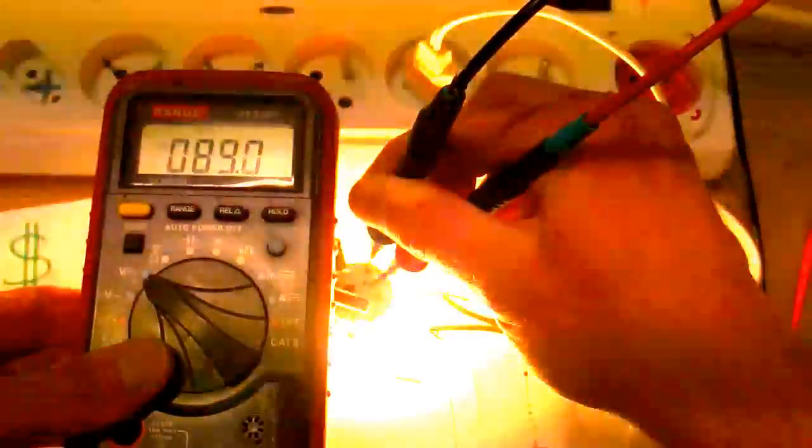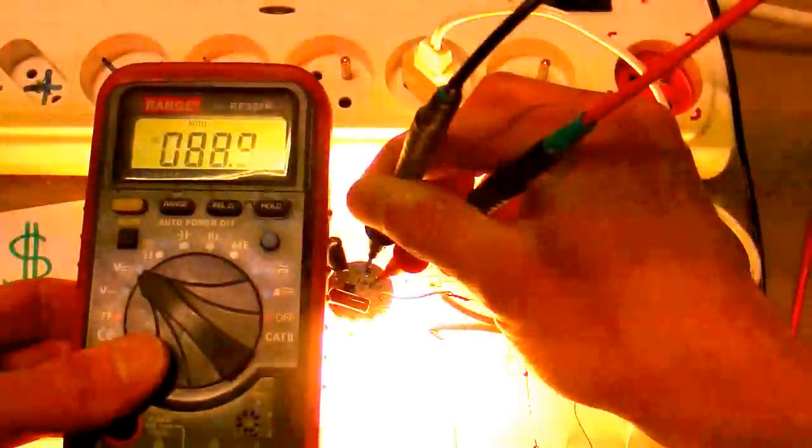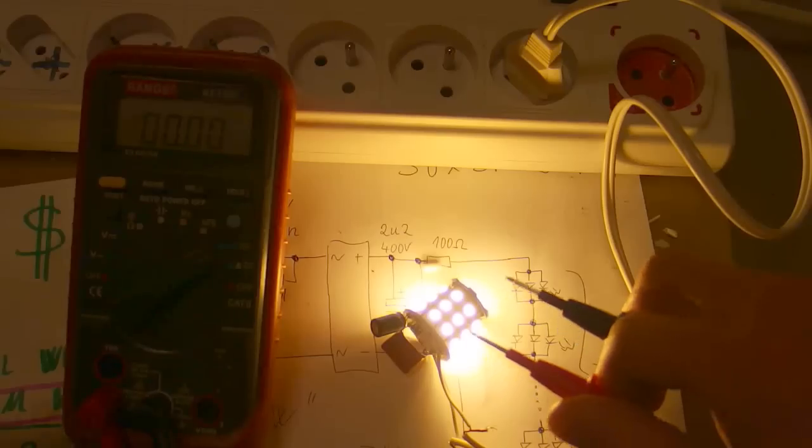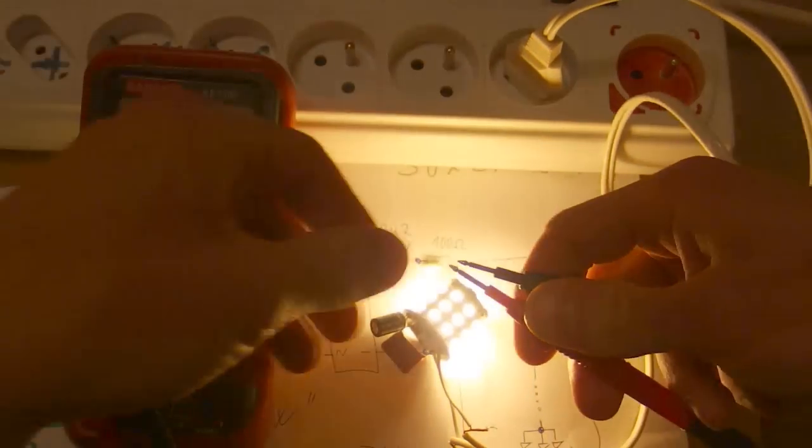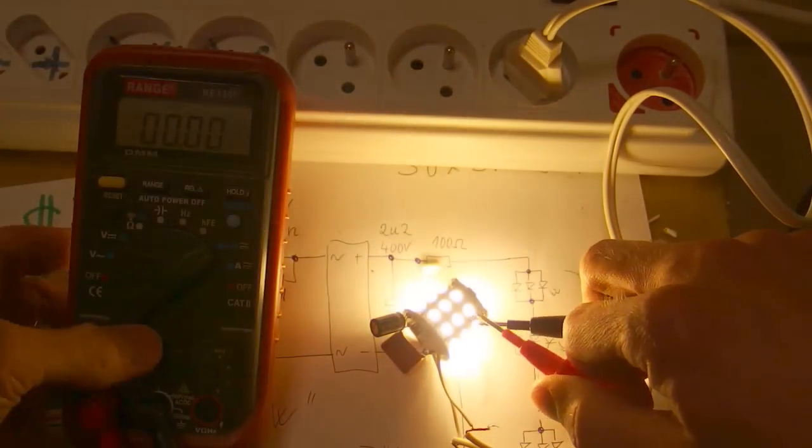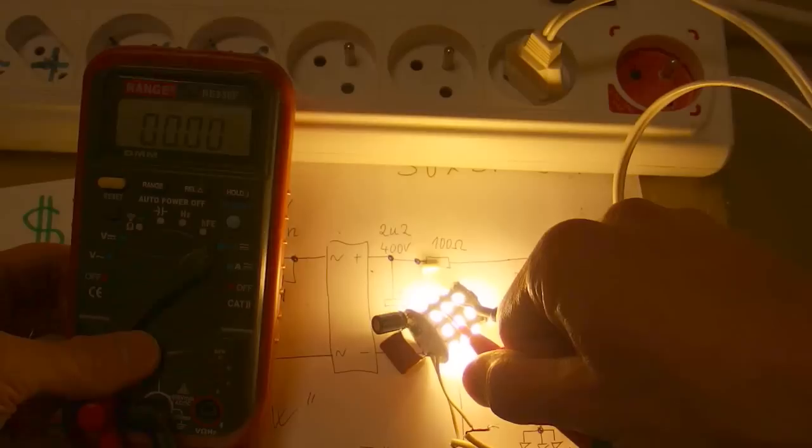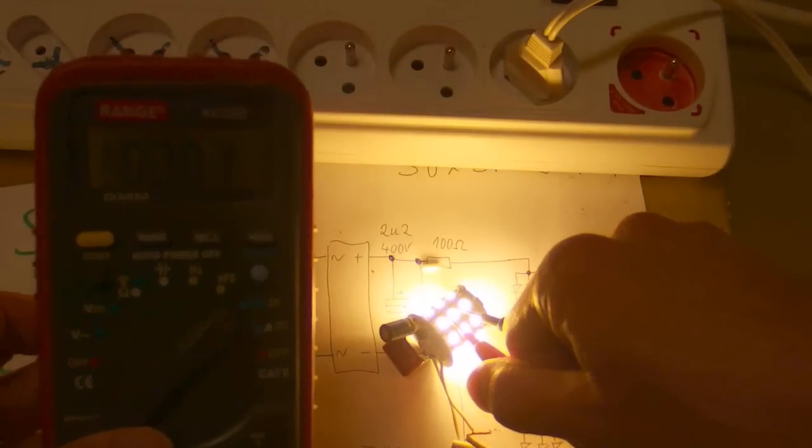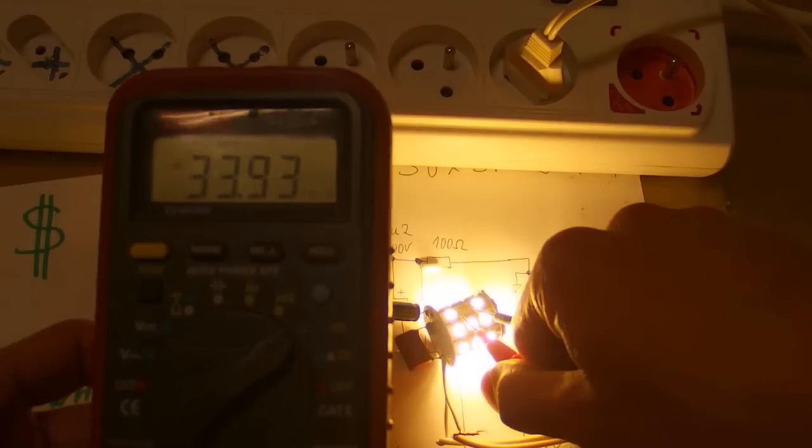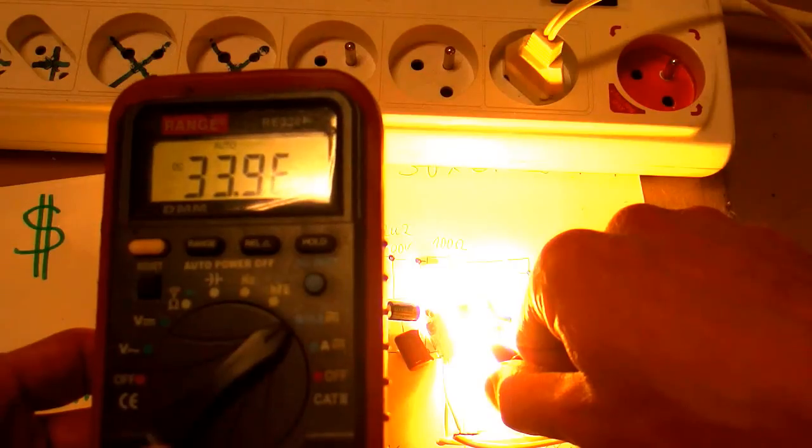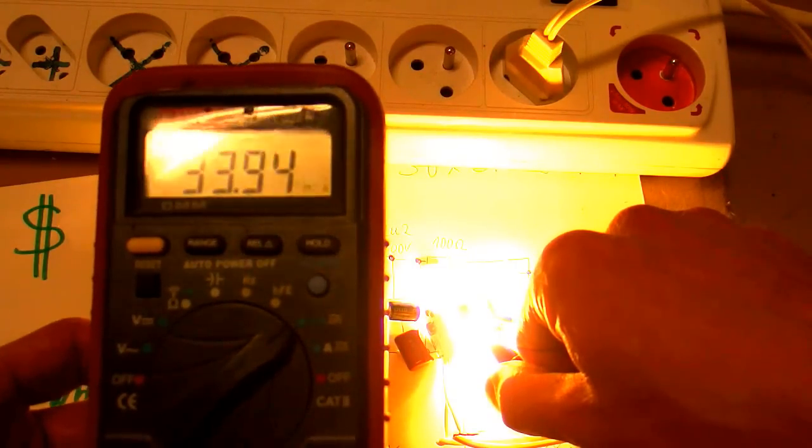And the voltage is about 89 volts, that's close. And the current is, I will short one of the LEDs with my current meter. One LED doesn't change much in total of 30 LEDs. About 34 milliamps.